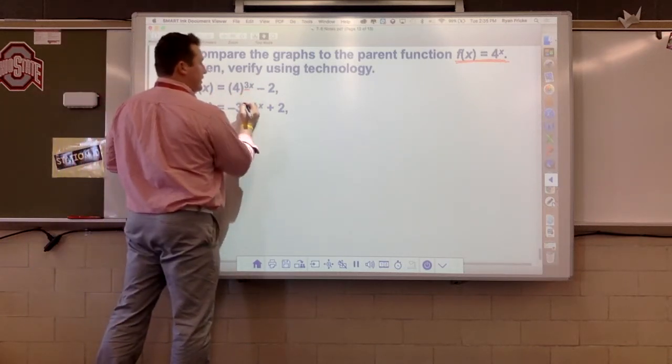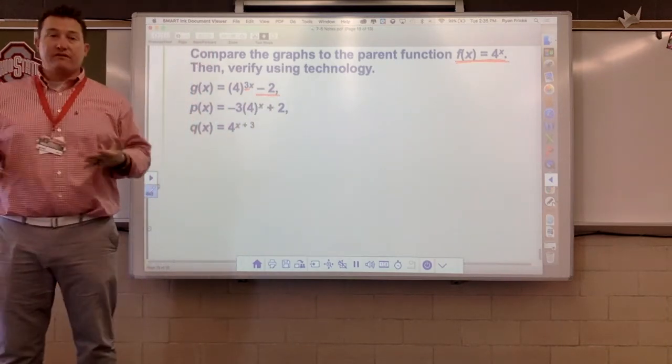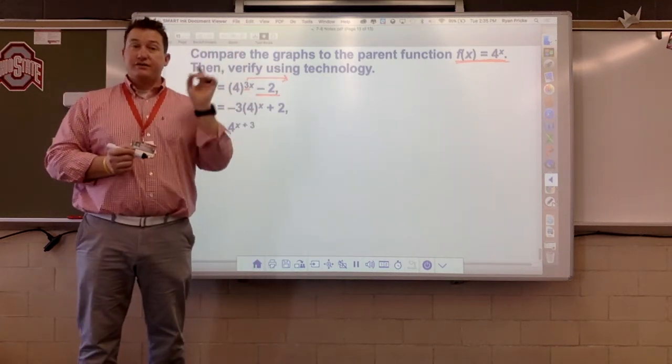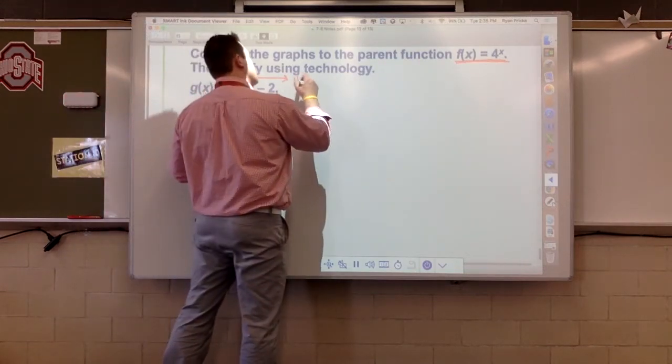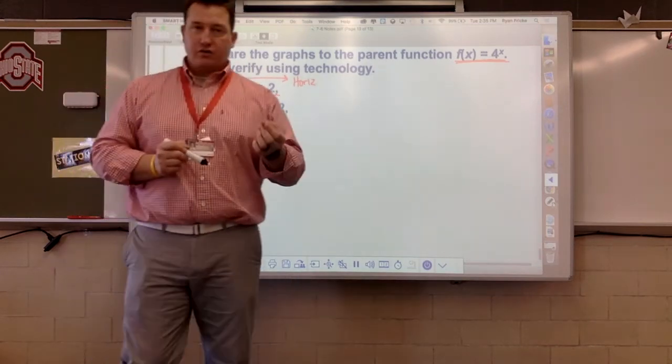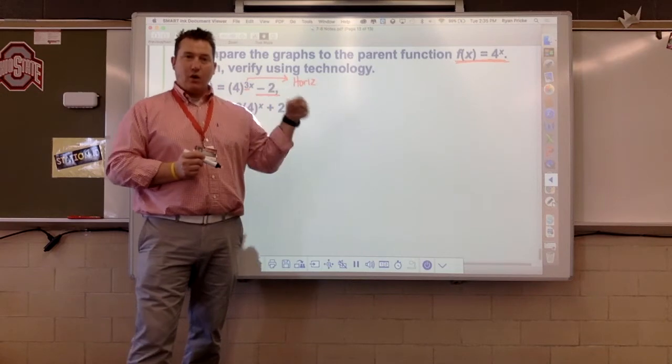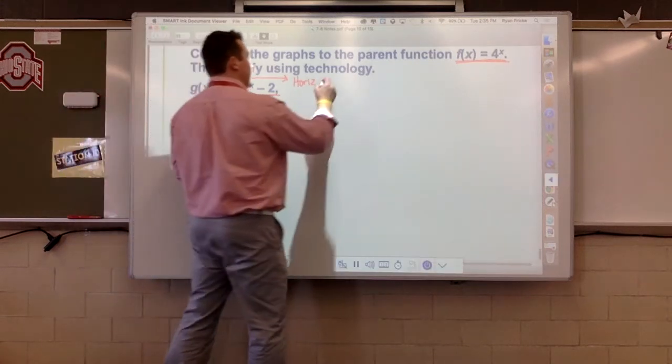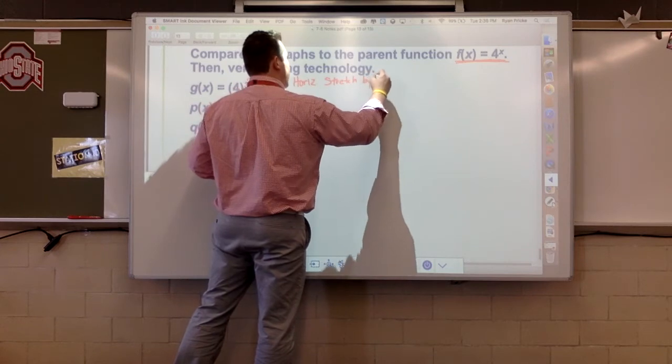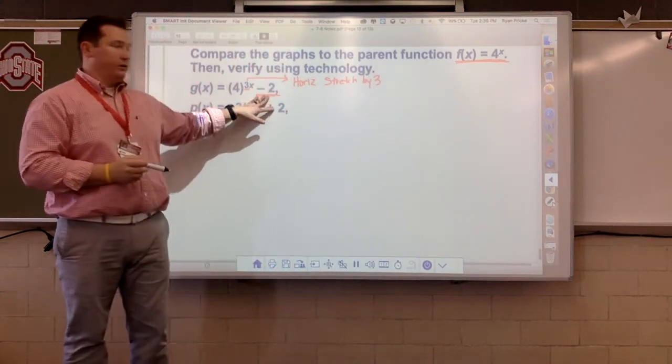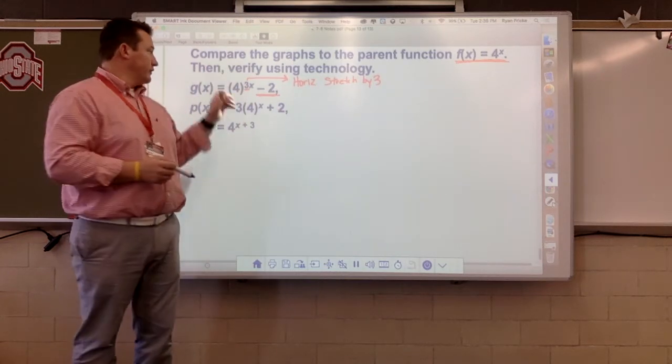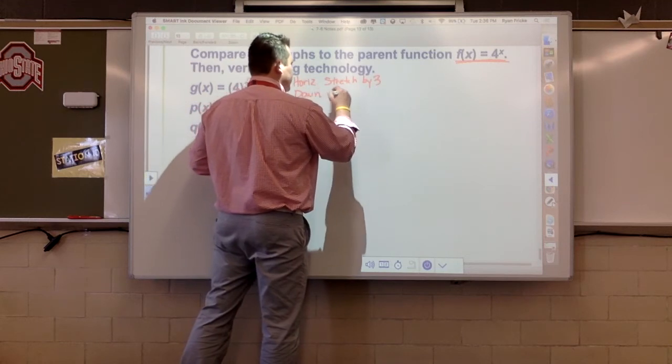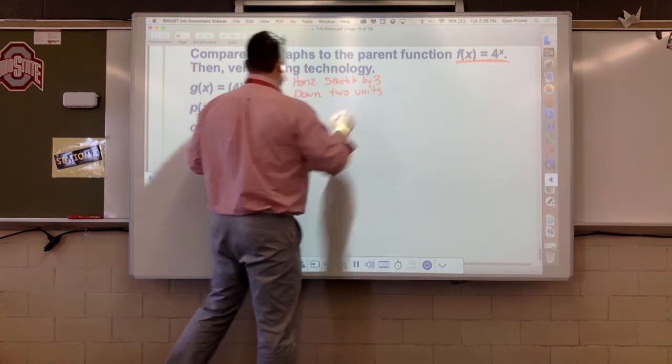Well, the 3 does what? Horizontal something or other. Horizontal choices would be compression or stretch. Remember, a vertical stretch is the exact same thing as a horizontal compression. So this number is not 0.3. If it was 0.3, we'd be good to go. So this is a horizontal stretch by three. And then we've got to decide what does minus 2 do? Is this a left-right move or is this an up and down move? Well, it's not with the variable. It's outside of that. So that is an up or down move. In this case, this is down 2 units.